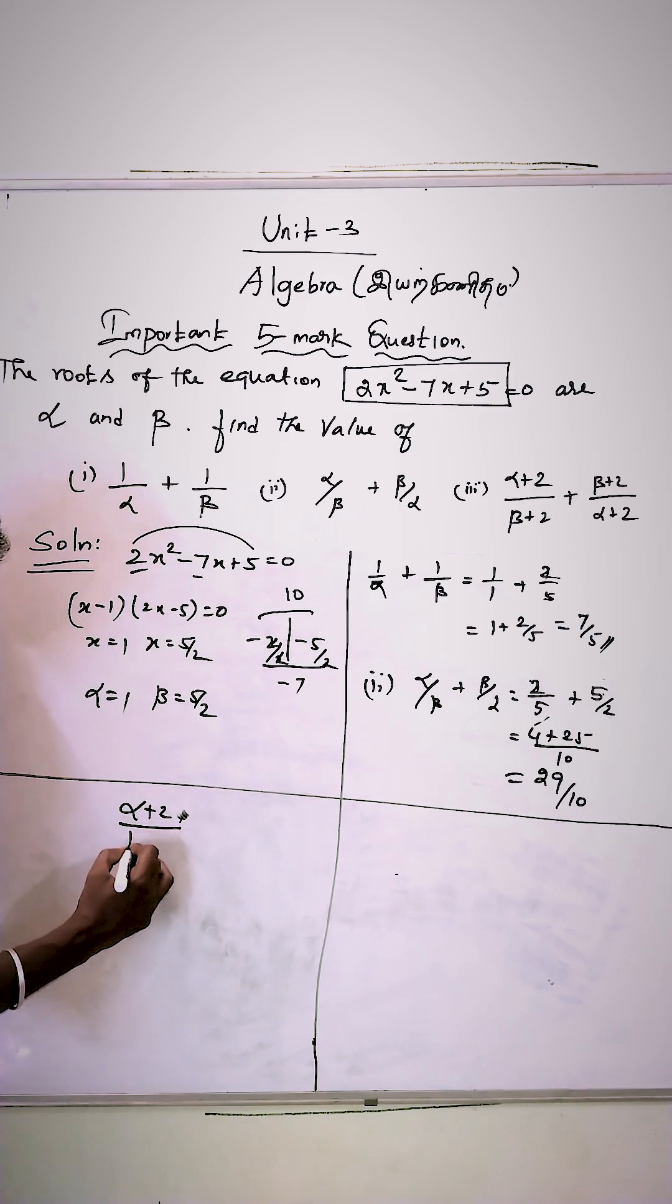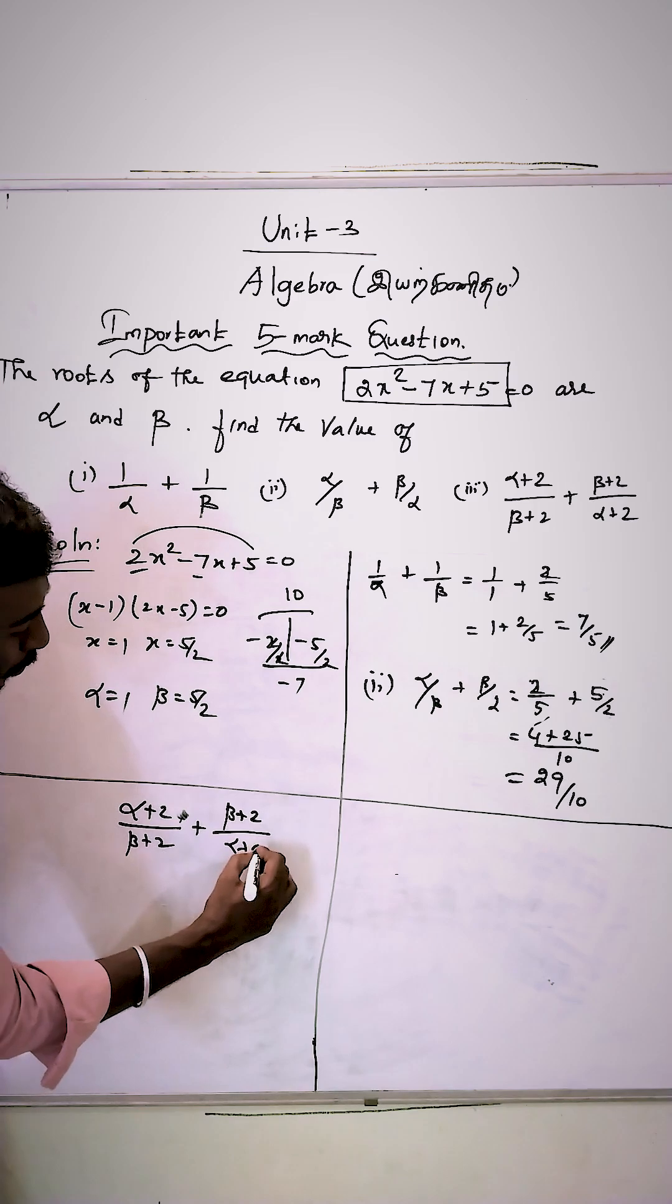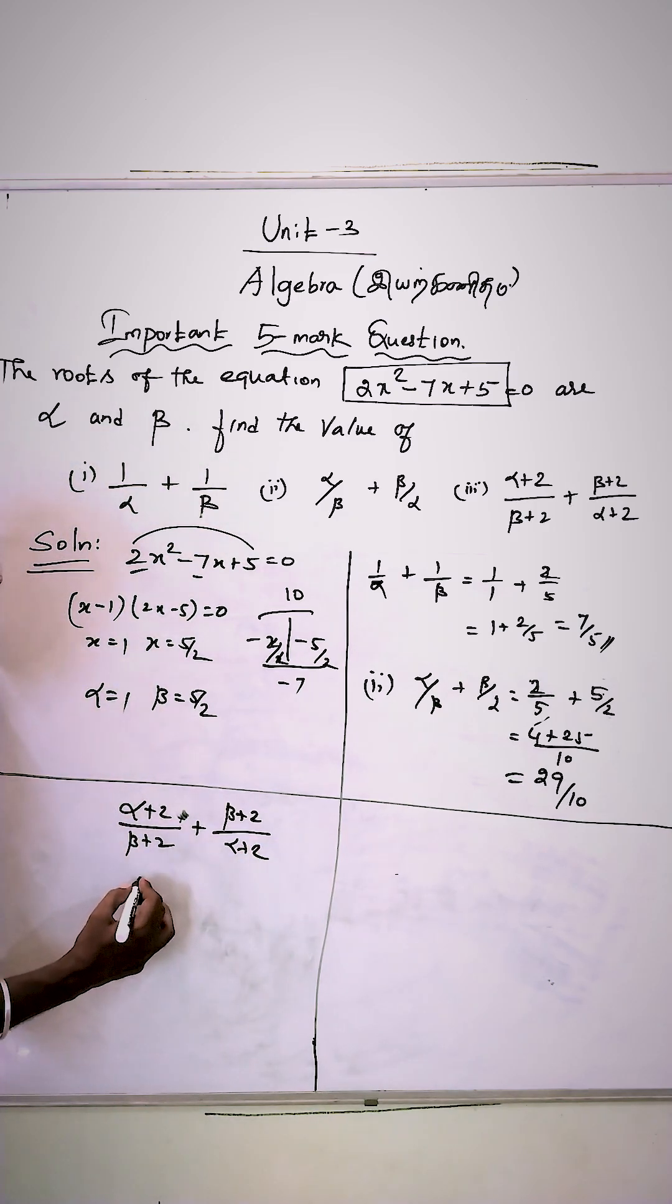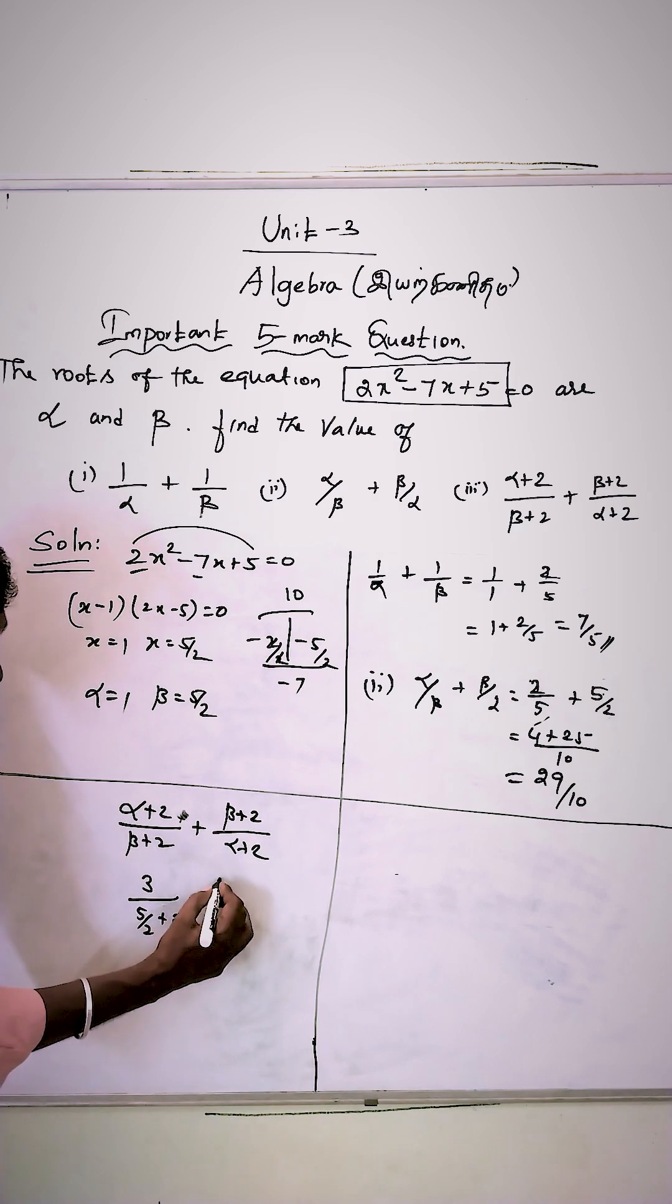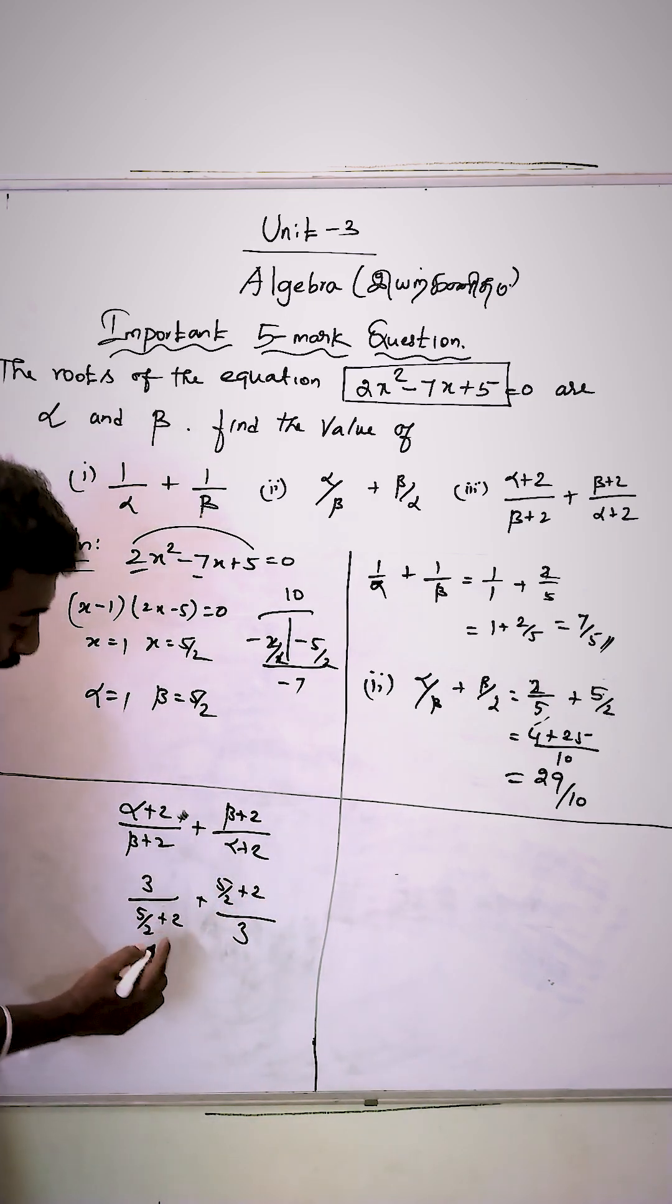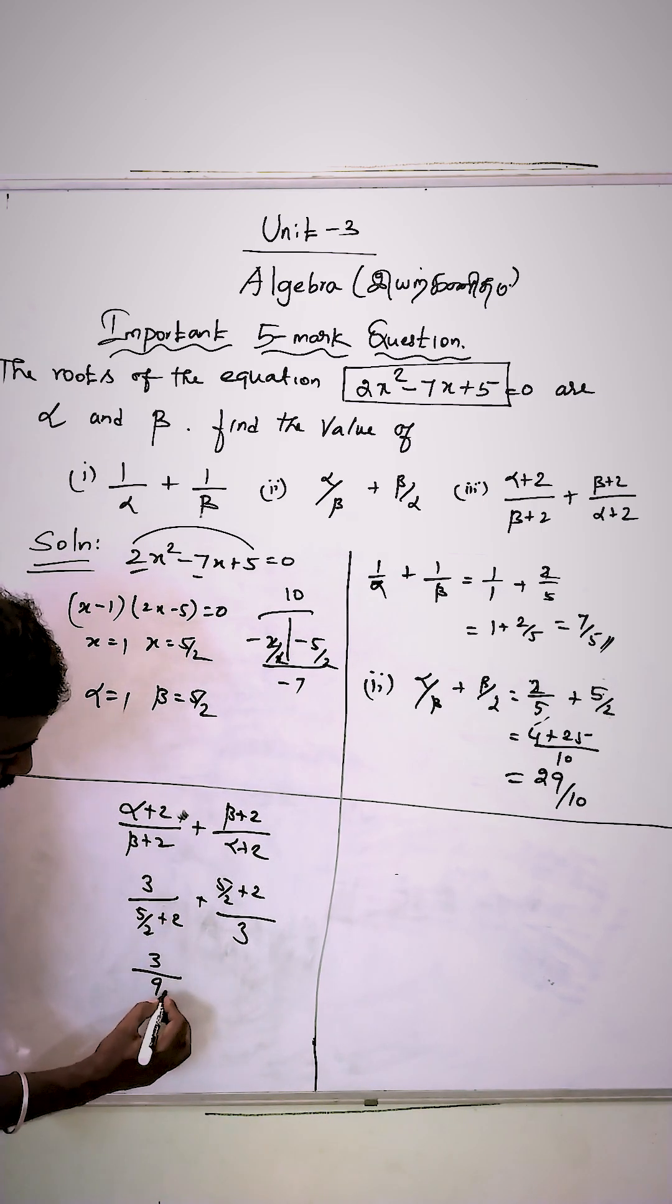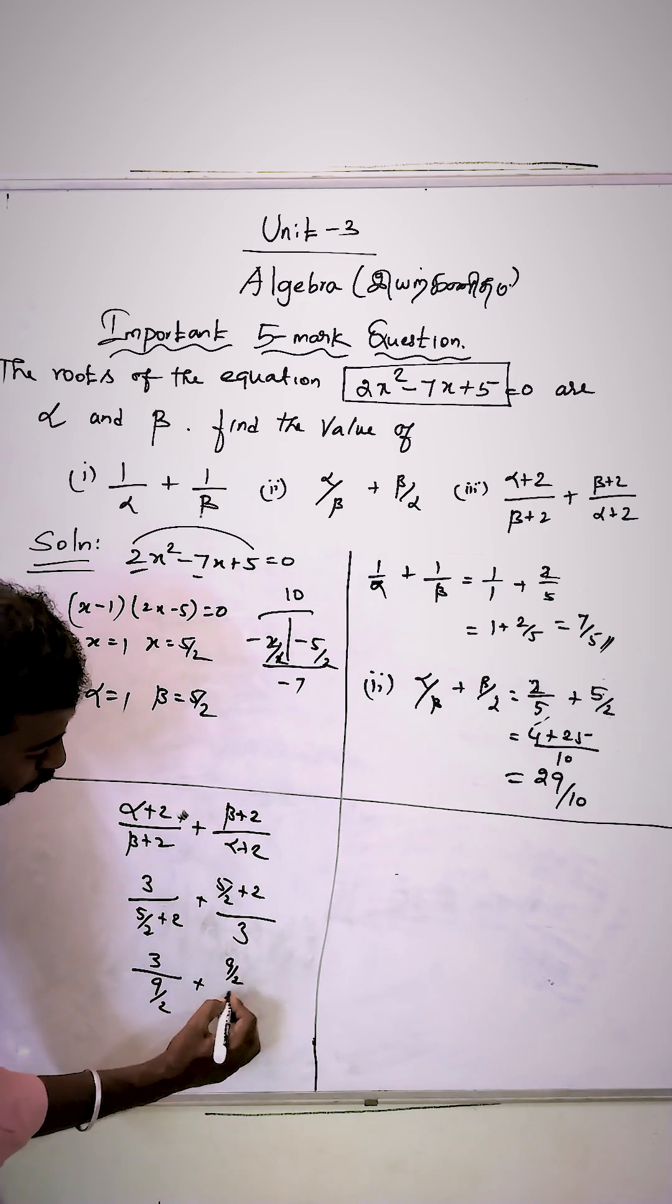Question 3: (alpha plus 2) divided by (beta plus 2) plus (beta plus 2) divided by (alpha plus 2). Alpha value 1 plus 2 is 3, divided by 5 by 2 plus 2. That is 3 divided by 9 by 2, plus 9 by 2 divided by 3.